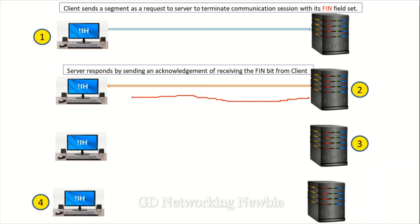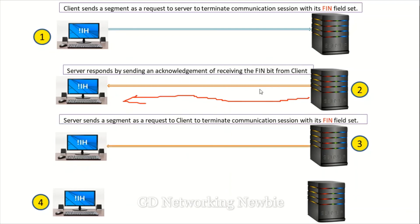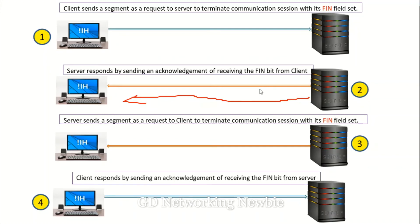The server says it has received the client's request and is ready to terminate the session. After that, the server also sends a segment to the client requesting termination of its direction, setting the FIN flag in the TCP header. Finally, the client sends an acknowledgement back to the server confirming it received the FIN bit and is ready to terminate the session. These are the four steps required to terminate a TCP session.